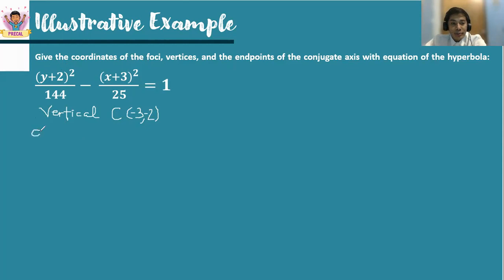Next is to determine the distances a and b based from the formula. The a squared is located on the y minus k part, so we have the square root of 144, which is plus or minus 12. And the square root of 25 is plus or minus 5. To get c, we add 144 plus 25, then get the square root. So that will be the square root of 169, which is plus or minus 13.